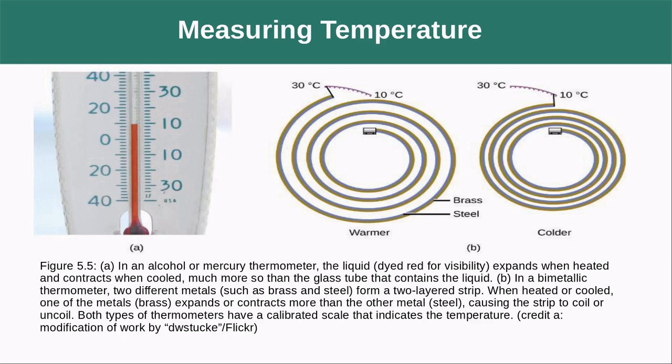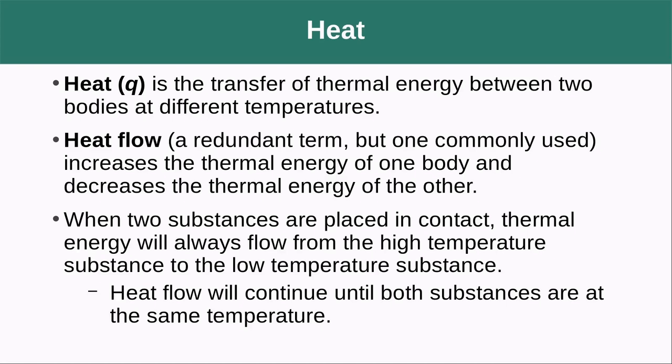We can measure temperature in a number of different ways. One classic way is through expansion — a liquid inside a glass tube expands and rises. Another is the thermocouple, commonly seen in old-school thermostats. As the coil heats, it unwinds, and as it cools, it contracts. By measuring the deflection across the coil, you can tell how hot or cold it is.